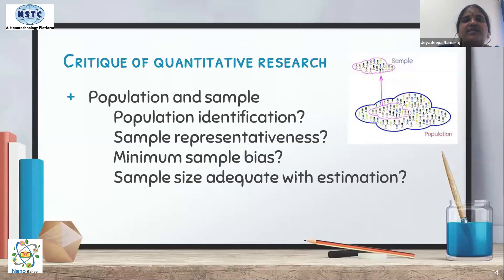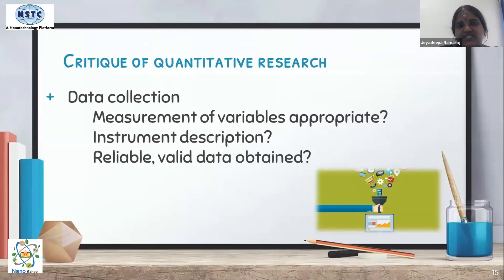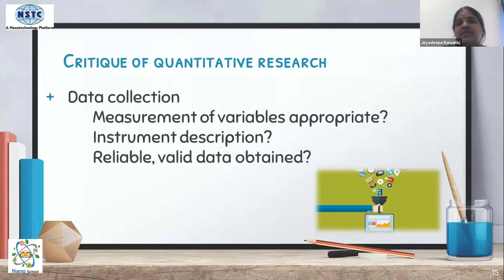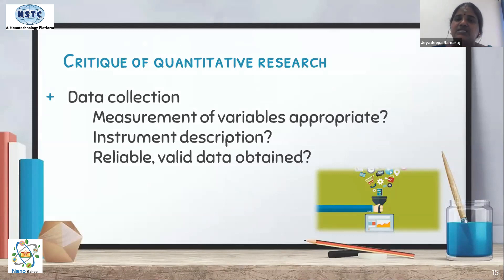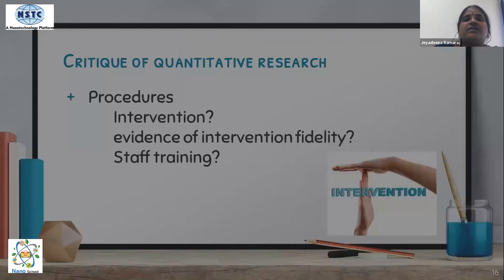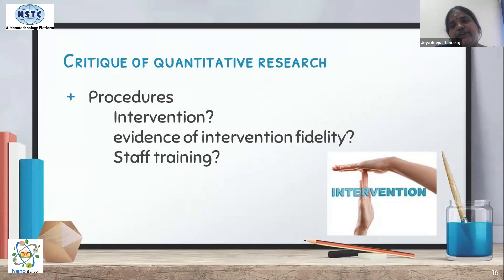Then go to data collection. Check whether the measurement of variables was appropriate, whether appropriate tools were used to collect the data, whether the instrument was clearly described, and whether reliable data was obtained from participants. See whether a description of all these aspects is given in the research study.